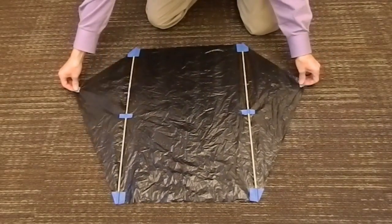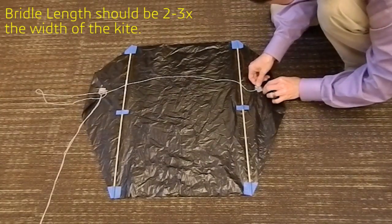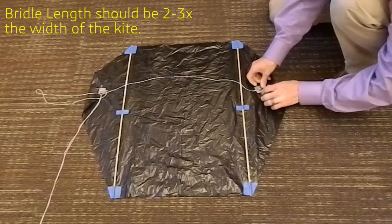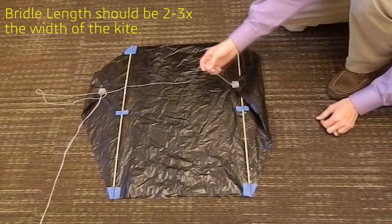You can see how simple this really is. Right now I'm just taping the strings on with more duct tape. I didn't feel the need to punch a hole for this kite because it's really small and won't pull very hard.